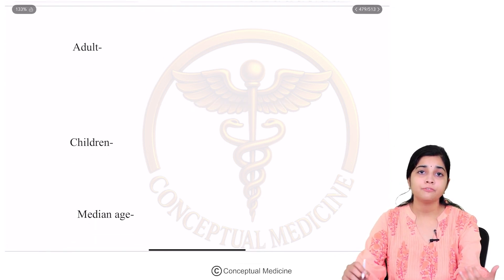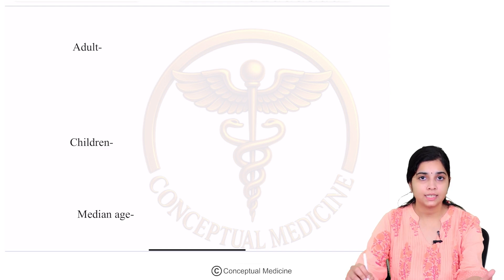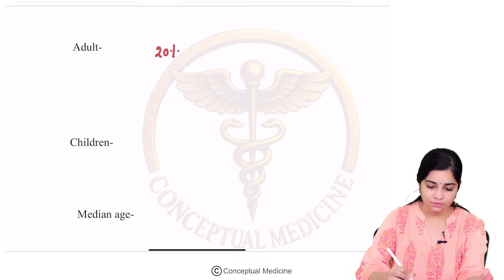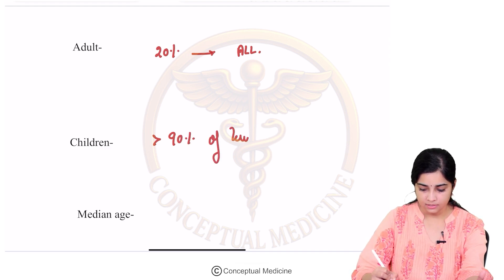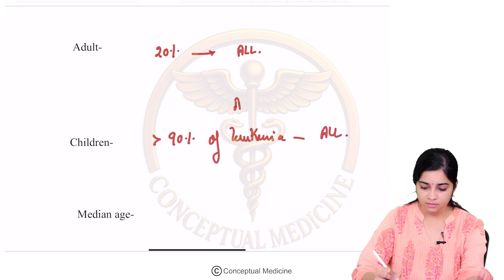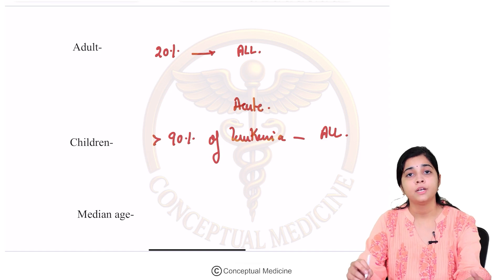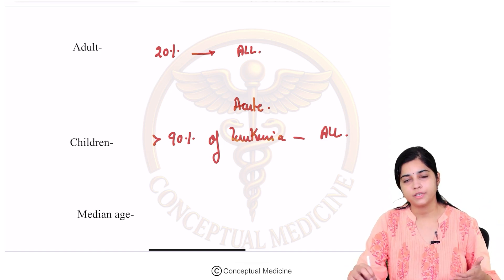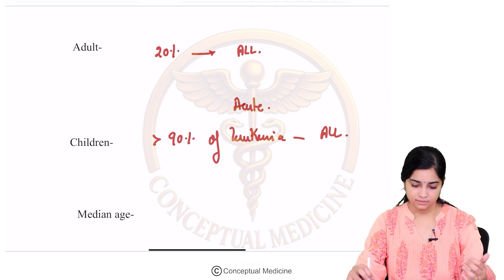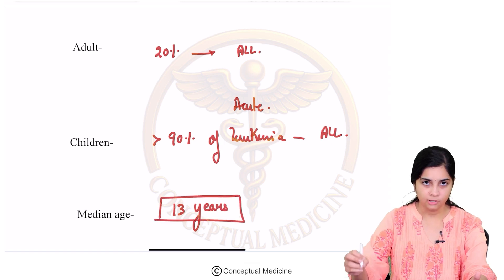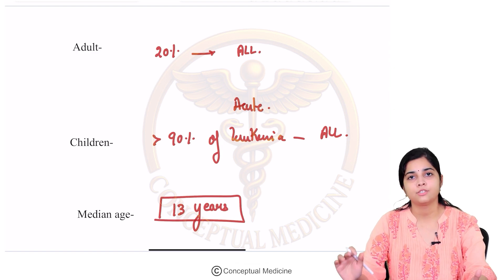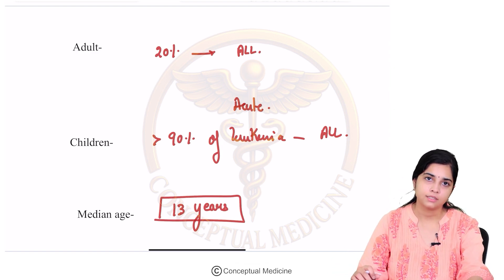As we learned in the AML chapter, in adults only 20% of acute leukemias is usually ALL, but in children and adolescents more than 90% of leukemias is ALL. The median age of diagnosis of ALL is usually around 13 years.